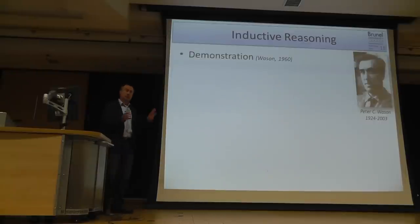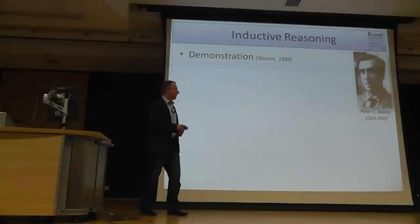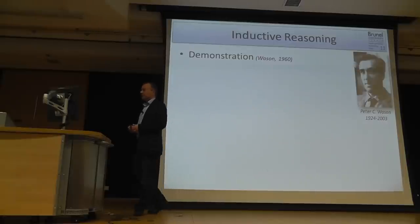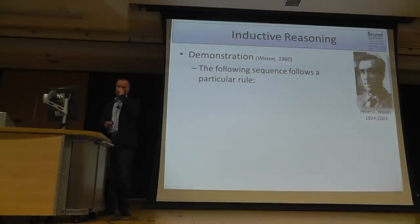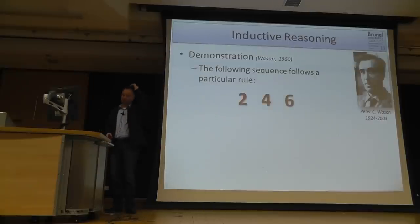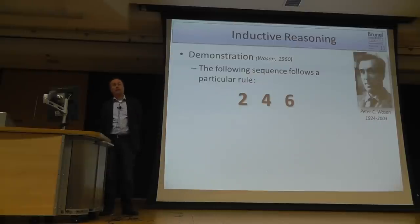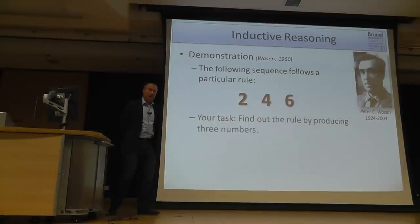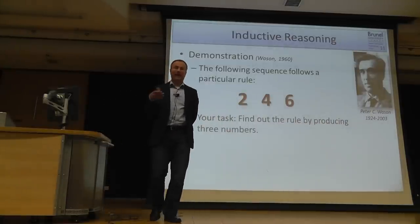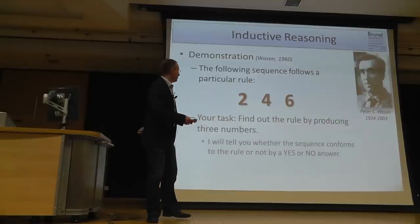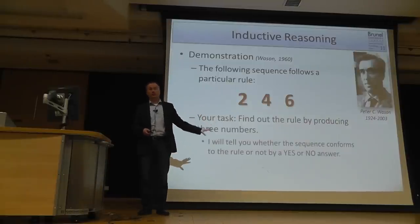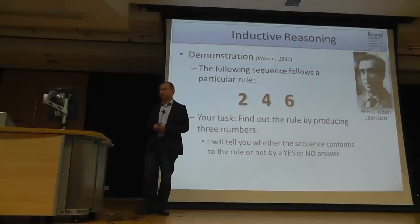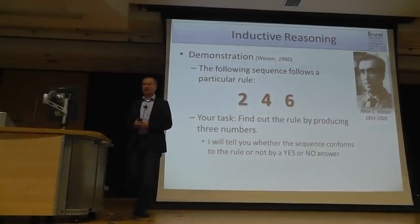Here is a practical demonstration of this idea, first done by Peter Wason. I will present three numbers — two, four, six — and they adhere to a particular rule. Your task is to find out the rule. You can do that by producing three numbers, and I will tell you only whether the numbers you give me adhere to the sequence or not, by saying yes or no.